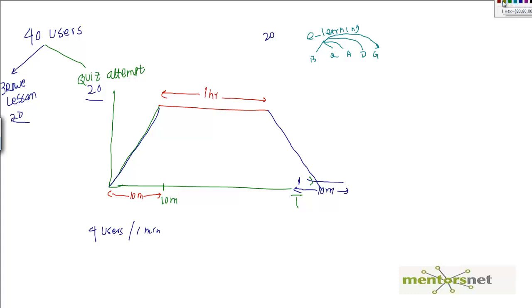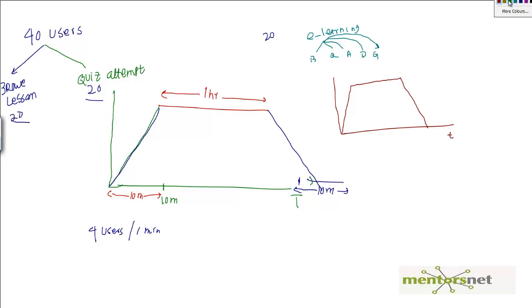These are the possible activities, and here is a very valid scenario. At time T, the teacher asks students to first learn from the books — so they do the browse lesson activity for one hour. After browse lesson finishes, the teacher assigns them to attempt quizzes. So all 20 users then attempt the quiz. This is the scenario: browse lesson, then quiz attempts.